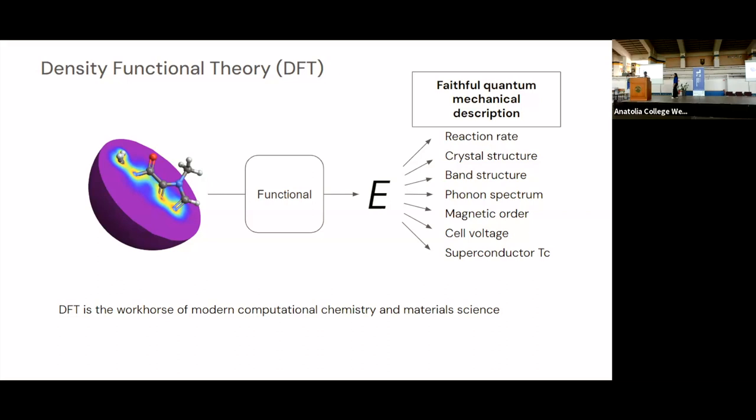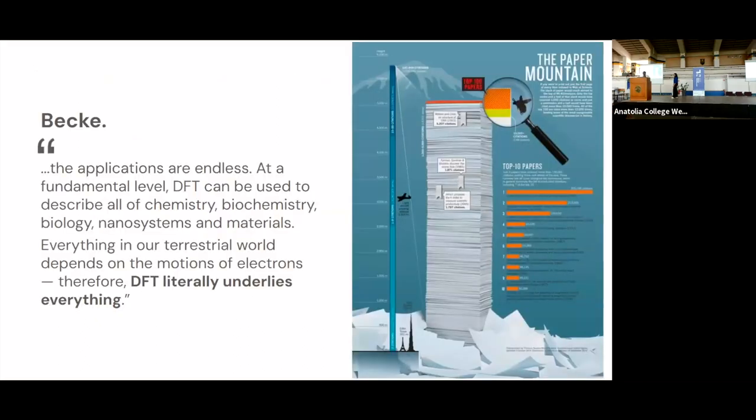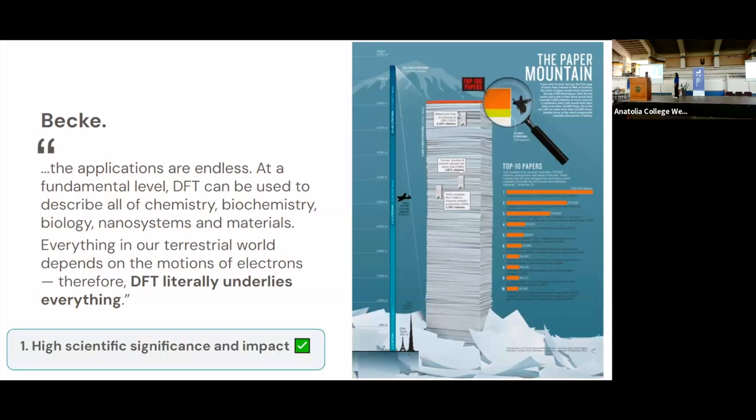And so because it's a far more efficient method than some other quantum mechanical methods, many scientists use DFT in their research and computational chemistry and material science, and some might say it's pretty much the workhorse of all modern computational chemistry and material science. And so scientists can use this method to basically get out quantum mechanical descriptors related to their application. And it's so widely used that actually 12 of the top 100 cited papers of all time are related to DFT, and two of those are in the top 10. And Becke, who is one of the authors of those top two papers, says that the applications are endless. At a fundamental level, DFT can be used to describe all of chemistry, biochemistry, biology, nanosystems, and materials. And everything in our terrestrial world depends on notions of electrons, and therefore DFT literally underlies everything. And so in there lies our first requirement of having high scientific significance and impact.